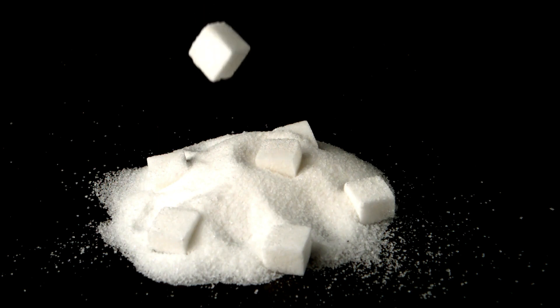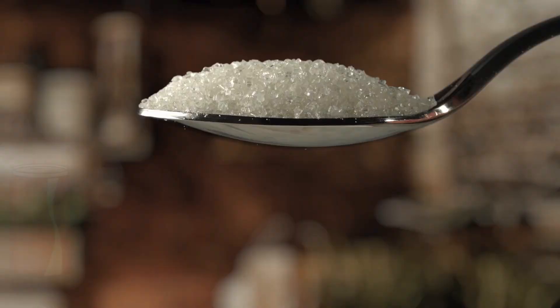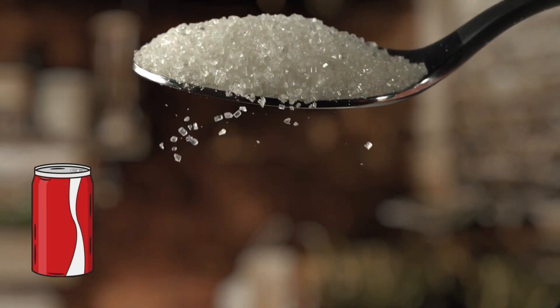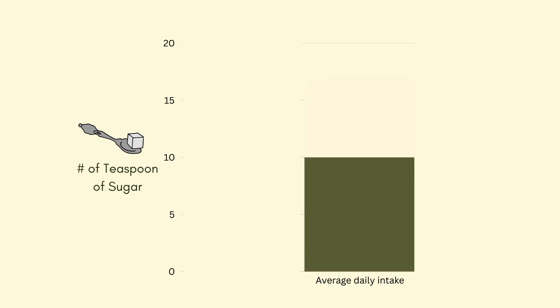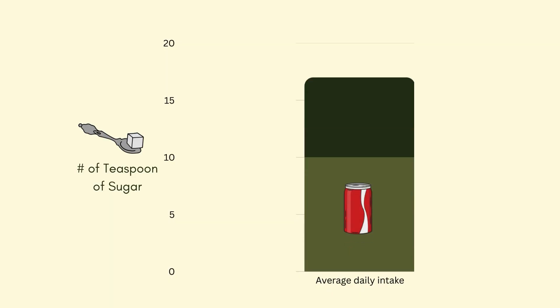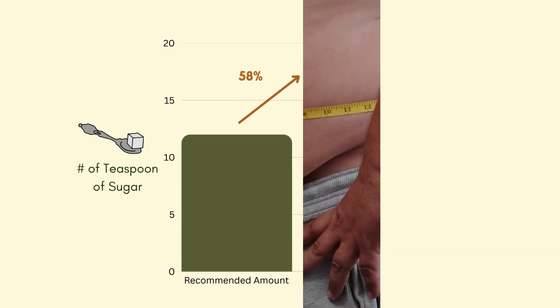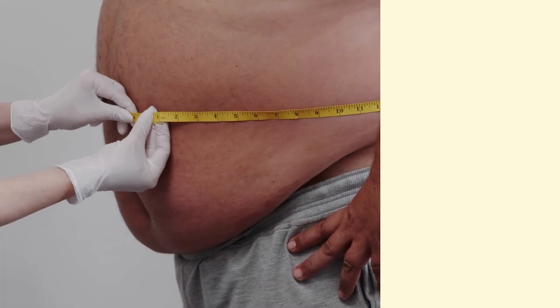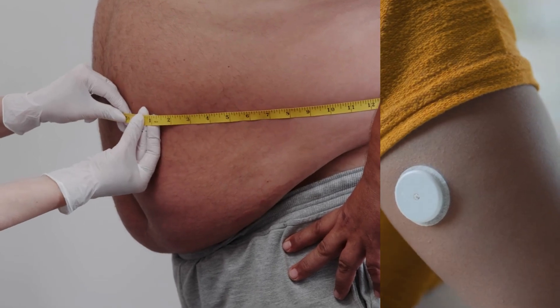Sugar is everywhere, in soft drinks, snacks, bread, and even foods you wouldn't expect. For example, a single can of cola packs nearly 10 teaspoons of sugar, and many breakfast cereals rival that amount. The average person consumes about 17 teaspoons of added sugar a day, far more than the recommended limit. This overconsumption has serious health implications from obesity to type 2 diabetes.